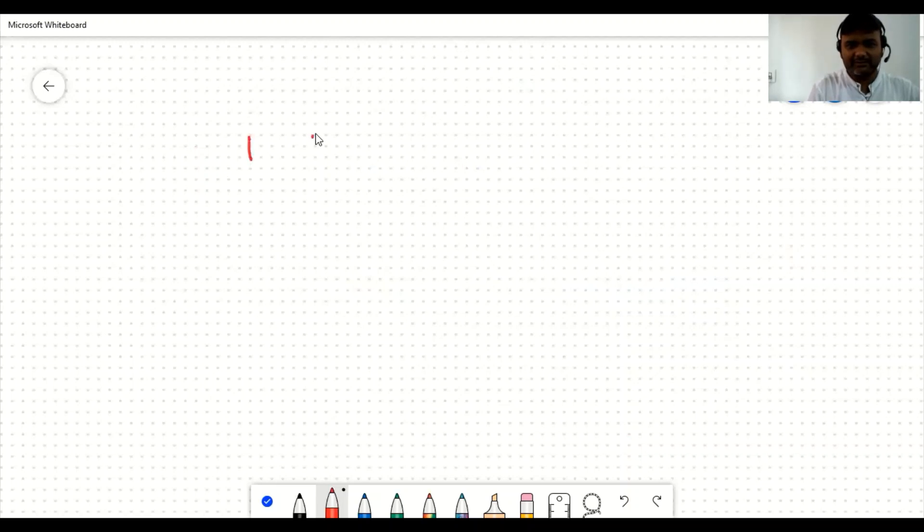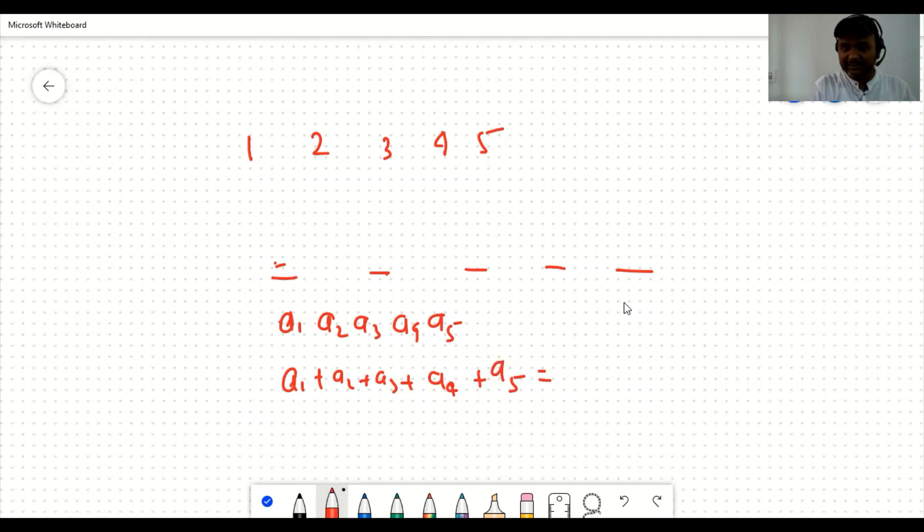Now see, you have 1, 2, 3, 4, 5. If you have these 5 numbers in the empty places, you can arrange them in different positions - here 1, 2, 3, 4, 5 in various arrangements.